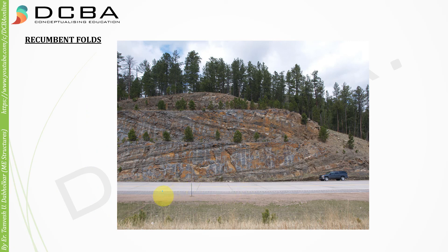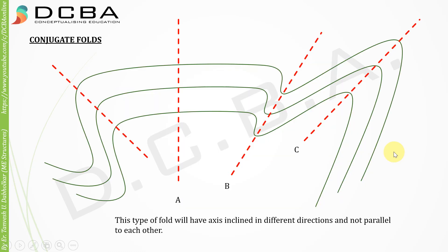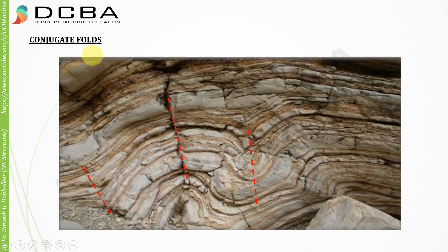You can see the recumbent folds where the axial plane has attained an almost horizontal position. Next we have conjugate folds — this type of fold has axes inclined in different directions, not parallel to each other. The axial planes are not parallel to each other, unlike the isoclinal ones. You can see multiple axial planes that are essentially not parallel to each other; such a fold is called a conjugate fold.